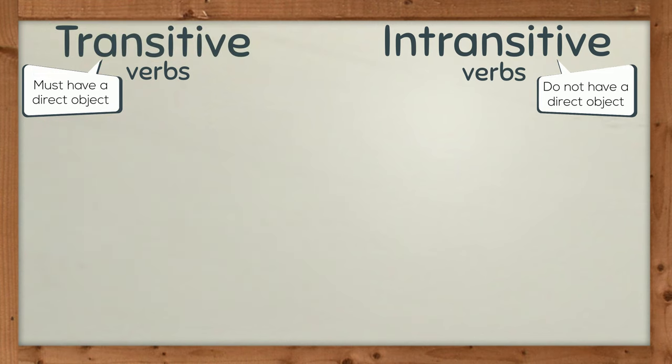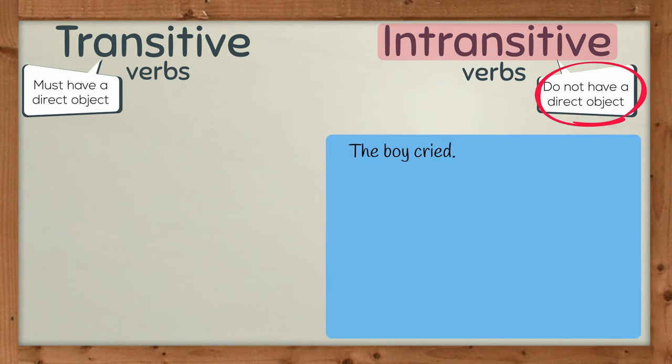Now, some sentences don't have a direct object because not all verbs need one. Verbs that don't need a direct object are called intransitive verbs. Take this example: the boy cried. There is nothing to receive the action. The action is not passed on to a direct object because there is no direct object.